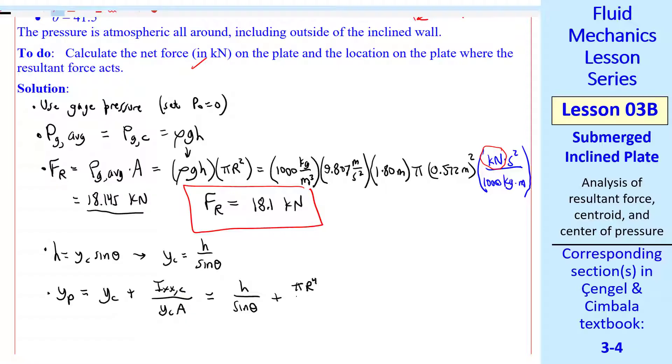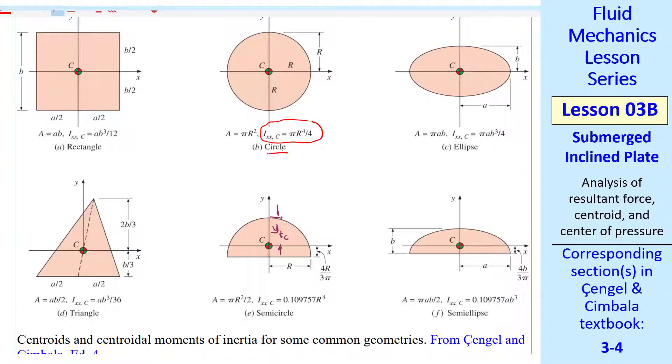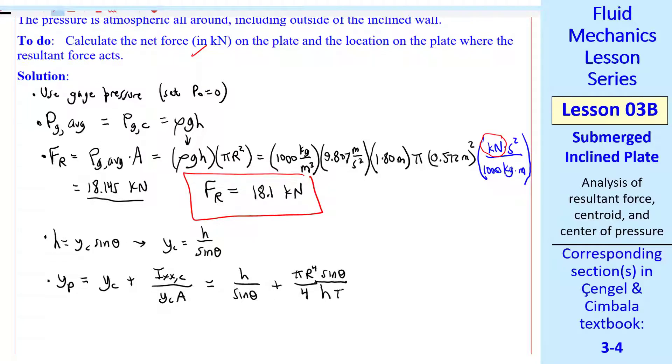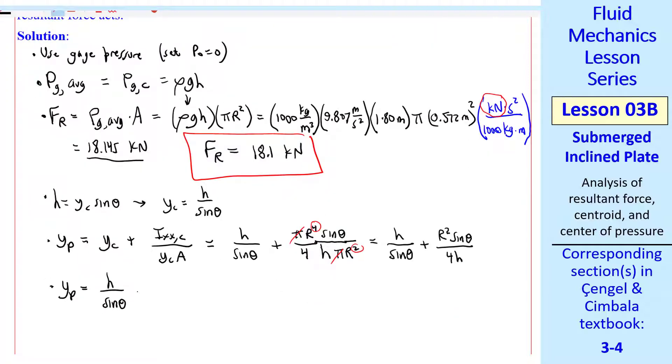And then finally the area is pi R squared. This simplifies to H over sine theta plus R squared sine theta over four H, noting that the pi's and two of the R's cancel. So our second answer in variable form is YP equal H over sine theta plus R squared sine theta over four H.